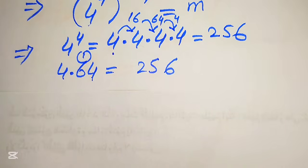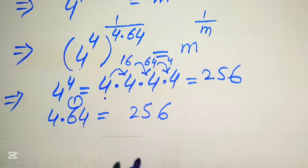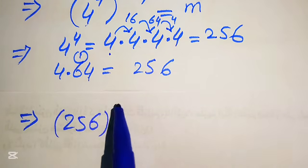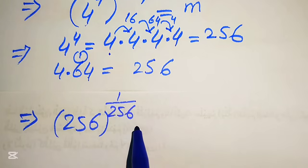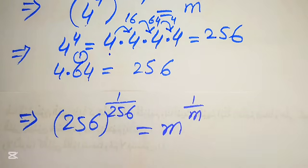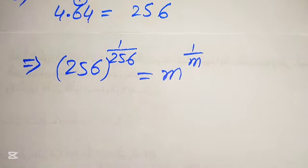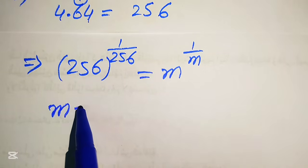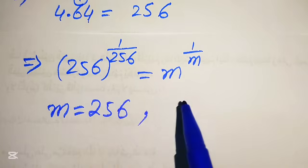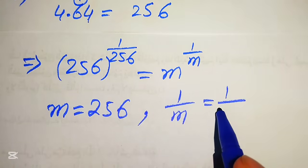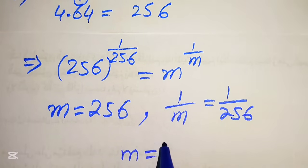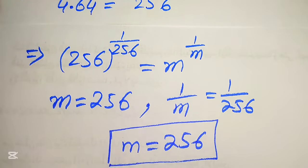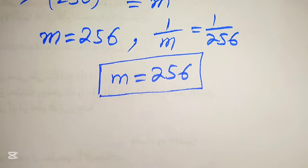Substituting these values back, our equation becomes 256 to the power of 1 over 256, equals m to the power of 1 over m. Now on both sides the exponent is the reciprocal of the base. Comparing bases gives m = 256, and comparing exponents also gives m = 256.